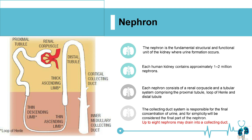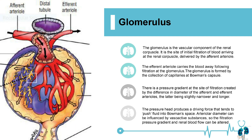Up to eight nephrons may drain into a collecting duct. The glomerulus is the vascular component of the renal capsule. It is the site of initial filtration of the blood arriving at the renal capsule.